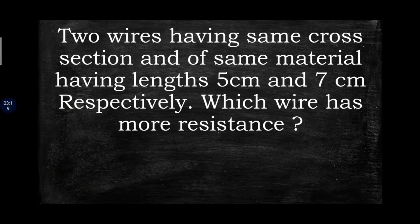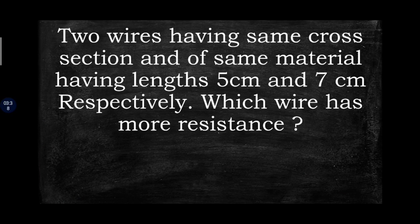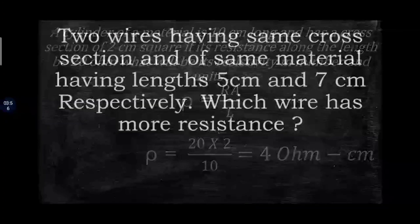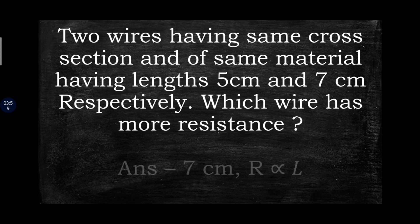Two wires having the same cross-section and made of the same material have lengths 5 cm and 7 cm respectively. Which wire has more resistance? Both wires have the same cross-section and the same material, meaning resistivity is also the same. The only differing quantity is length, and resistance is directly proportional to length. Therefore the 7 cm wire has more resistance.